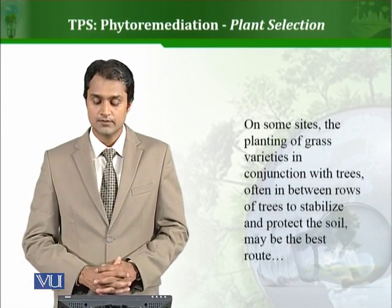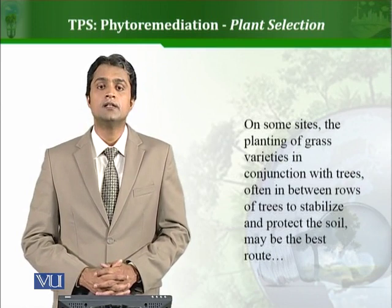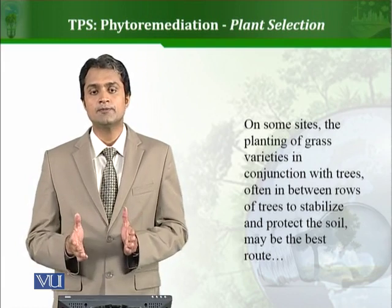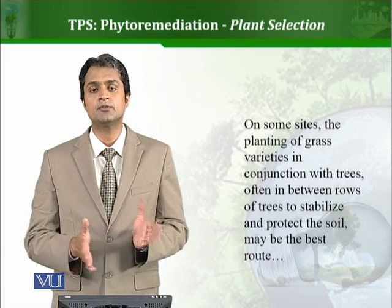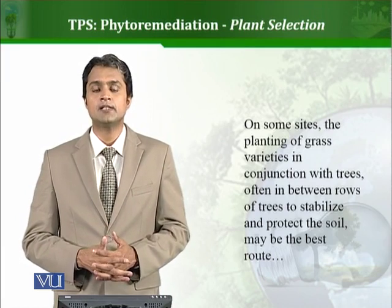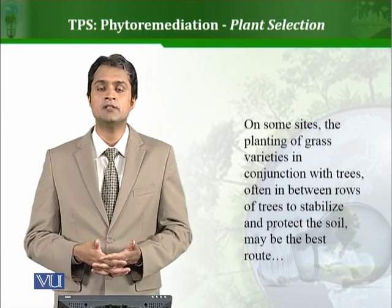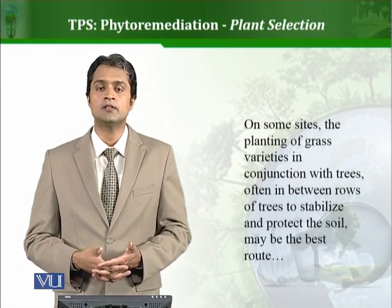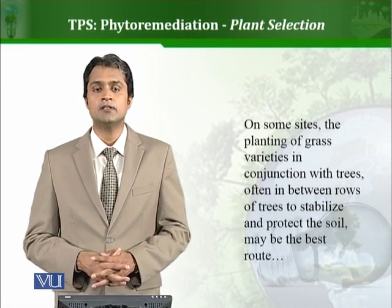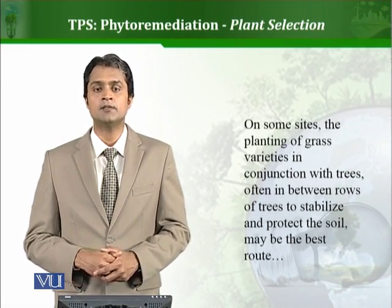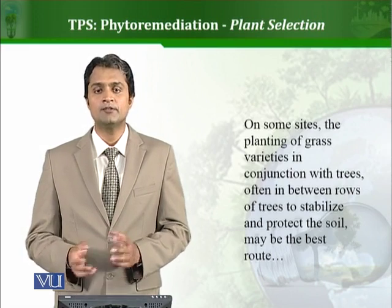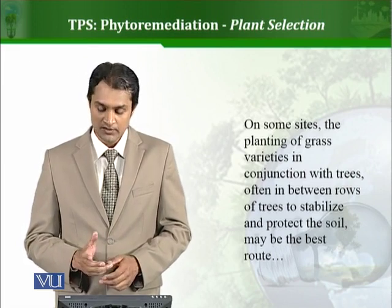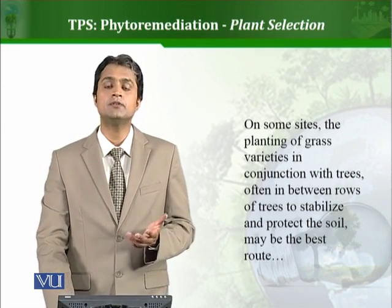On some sites, the planting of grass varieties is done in conjunction with trees, often in rows. This is helpful because different types of plant species planted together — whether in rows or other arrangements — actually help each other. They can help each other in growing, in removing, stabilizing, or destroying the contaminant more efficiently, and in maintaining their growth and stability in the soil. Such mixed plantings also strengthen soil structure and prevent soil runoff.